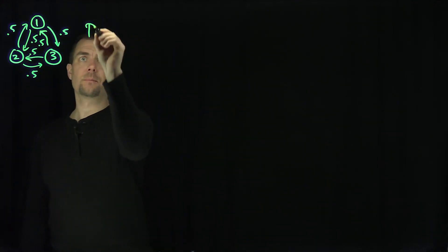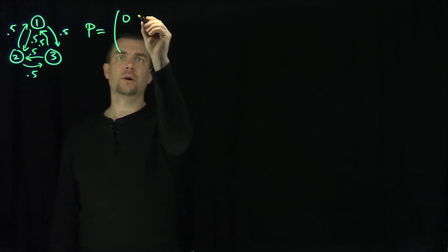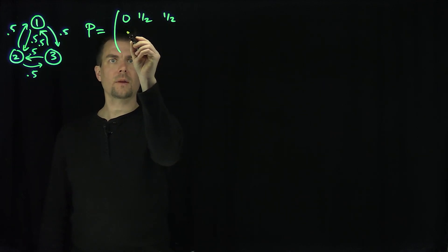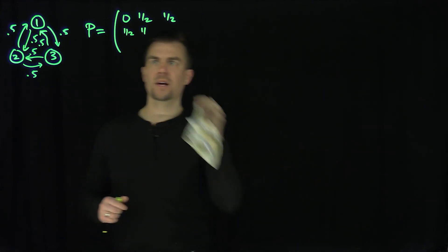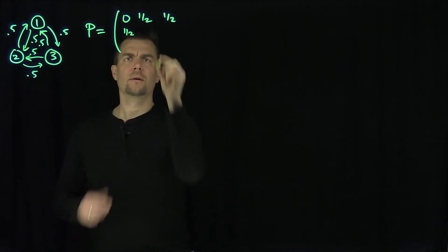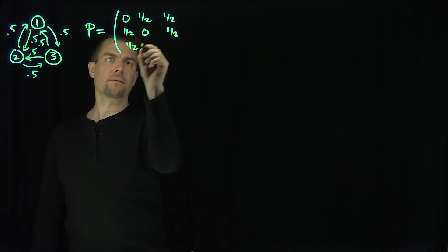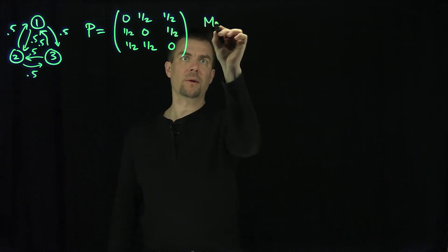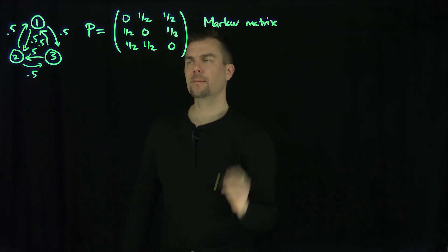So if I write down the matrix, P would be: you go from 1 to 1 with probability 0, then one-half, one-half; then one-half, zero, one-half; then one-half, one-half, zero. That's my Markov matrix, corresponding to this Markov chain.